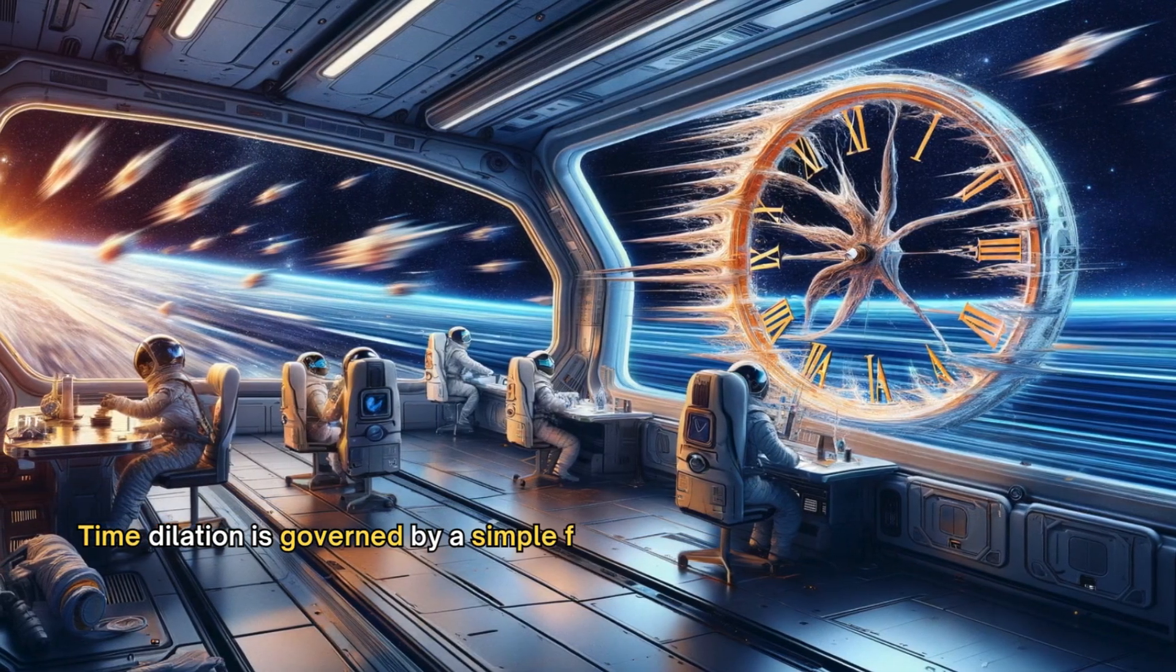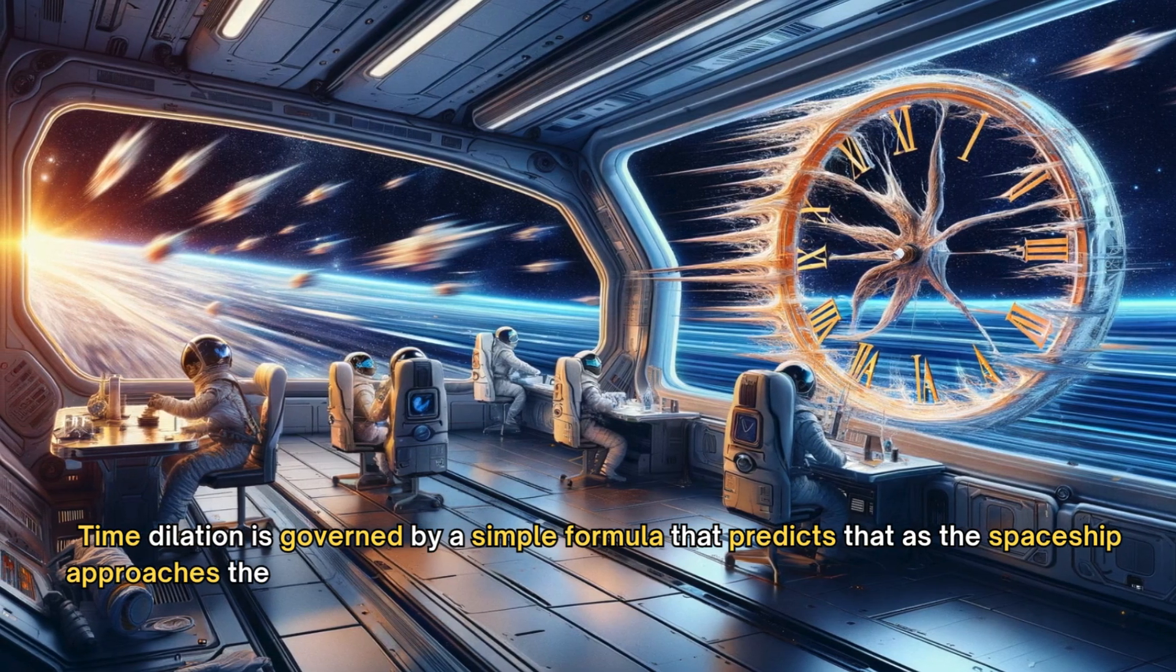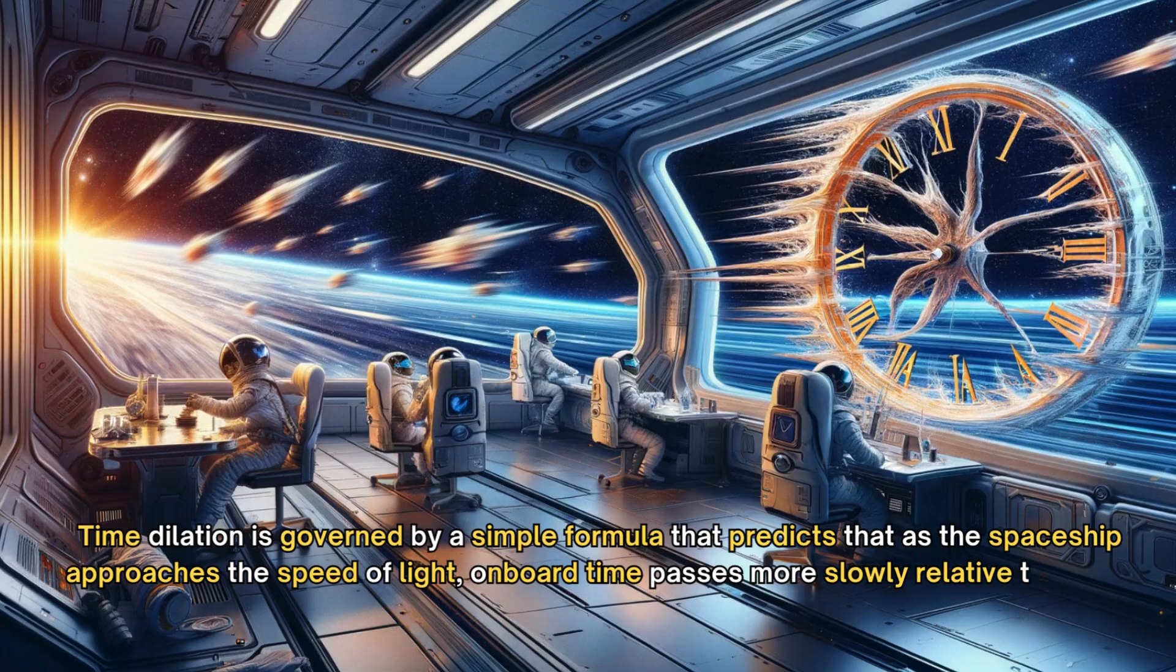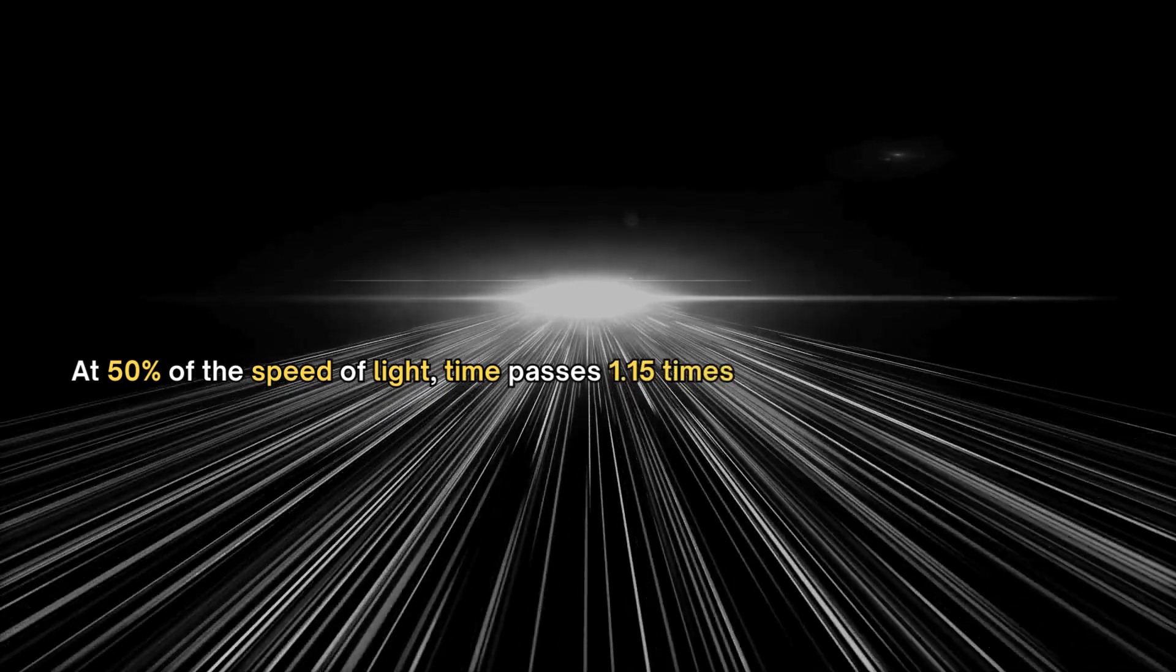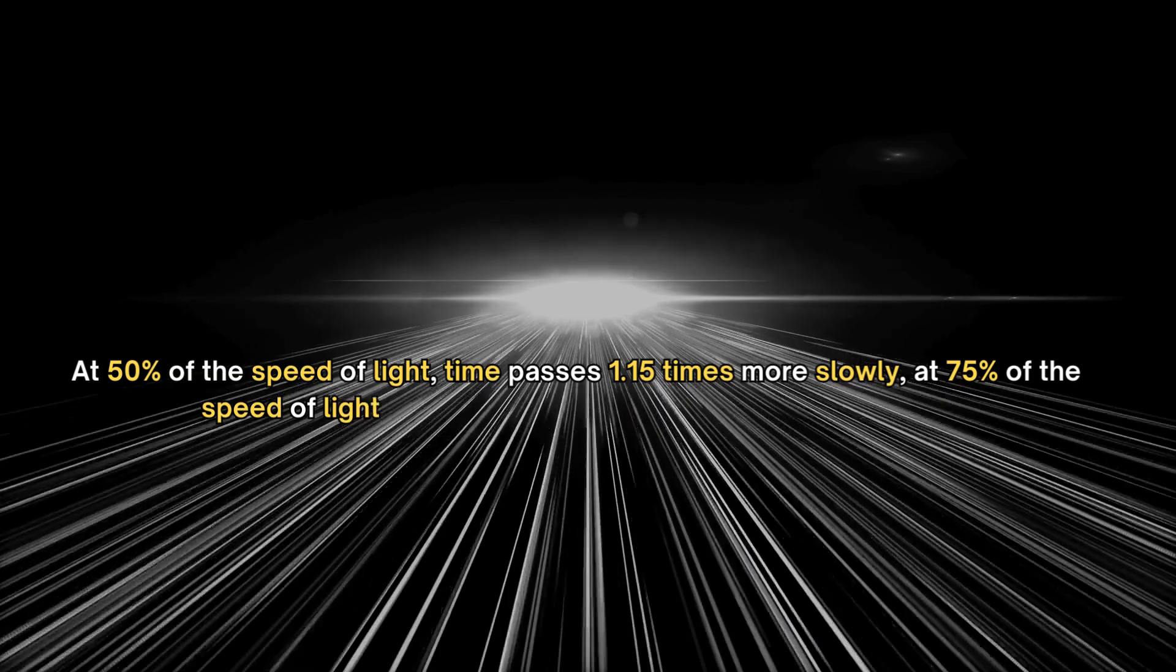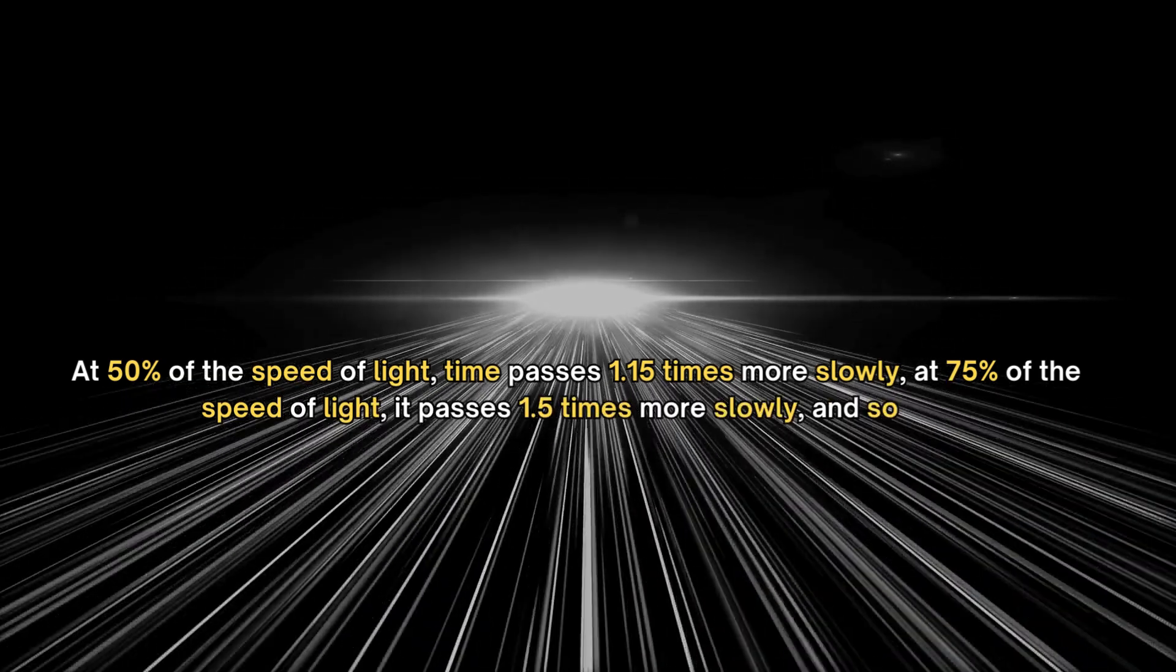Time dilation is governed by a simple formula that predicts that, as the spaceship approaches the speed of light, onboard time passes more slowly relative to Earth. At 50% of the speed of light, time passes 1.15 times more slowly. At 75% of the speed of light, it passes 1.5 times more slowly.